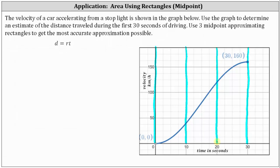We're asked to form three midpoint approximating rectangles, which means we use the function value in the middle of each subinterval as the height of each midpoint rectangle. For the first subinterval, the midpoint is when the time is 5 seconds. At 5 seconds, we go up to the function to determine the height of the first rectangle.